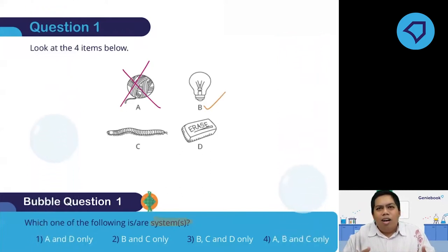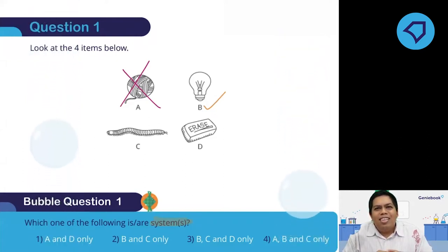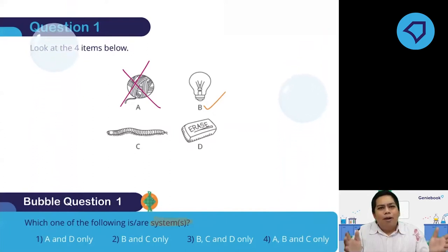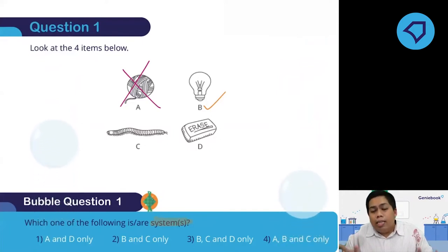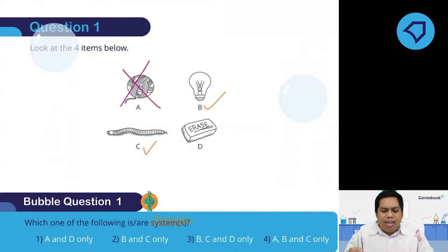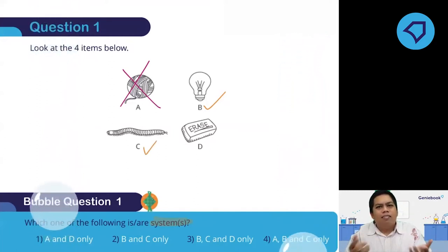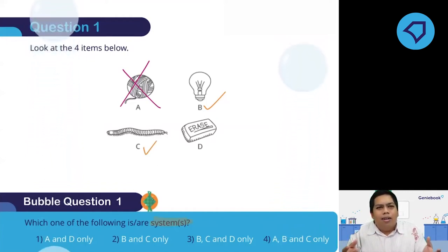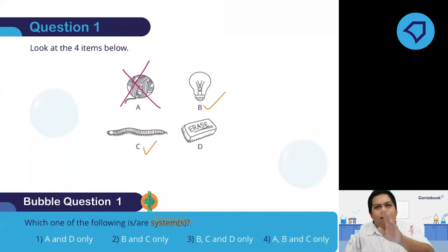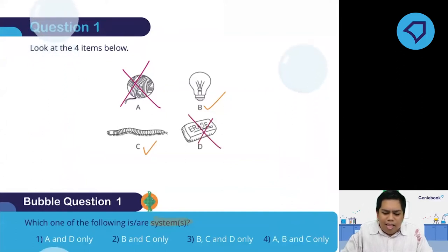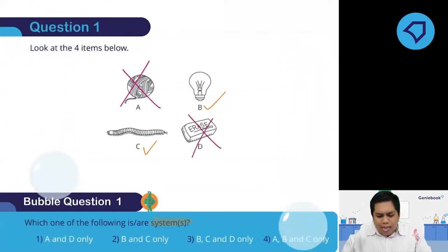Next, an organism — some of you said centipede, but this is actually a millipede. Whatever it is, it's a living organism, and all living organisms are actually systems. And the last one is an eraser — it's just made up of rubber, one part, so it is not a system. Therefore the answer is B and C only. Well done to those who got it correct.